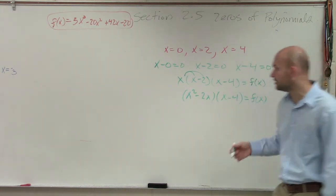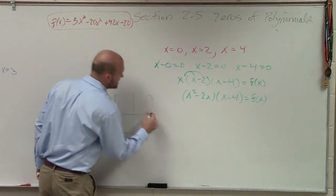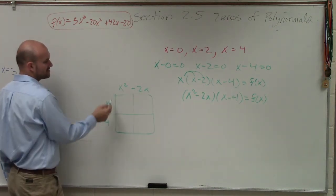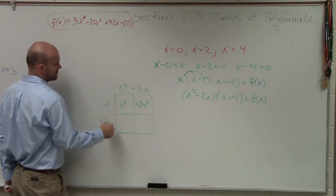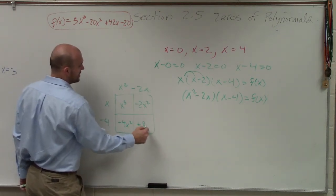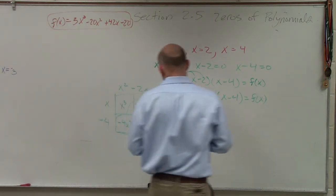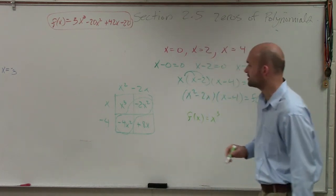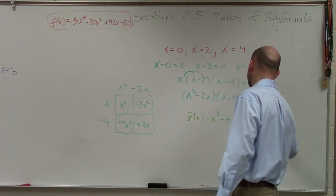And then, you can apply FOIL. So I'm going to apply the box method just because it's very organized. So when applying the box method, x times x squared is x cubed. x times negative 2x is negative 2x squared. x squared times negative 4x is a negative 4x squared. Negative 4 times negative x is a positive 8x. These are the same like terms. Therefore, my final polynomial is going to be f of x equals x cubed. Negative 4x plus negative 2x is going to be negative 6x squared plus 8x.